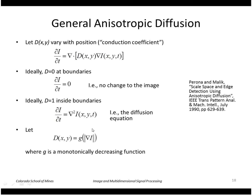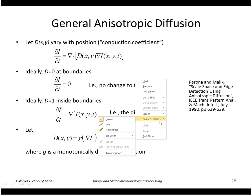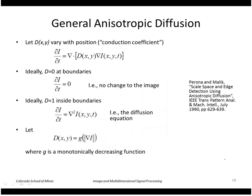We're going to make d a function of the magnitude of the gradient. A high gradient indicates that we're near a boundary, so we want g to be a monotonically decreasing function — starting at one and then decreasing.